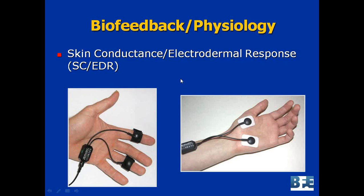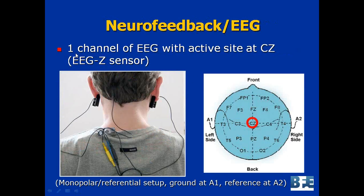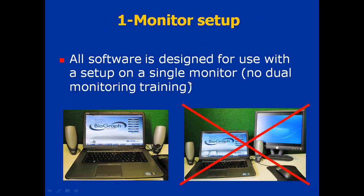We look at skin conductance for both encoder editions as well. Finally, we also look at one channel of EEG for both encoders — that's one EEG sensor. The placement site, at least the active site, is typically at CZ. When using CZ, it's a monopolar referential setup with the ground at A1 and reference at A2. All the training screens are designed for a single monitor setup — there is no dual monitor configuration, no separate client and clinician monitor. It's all put together as one.